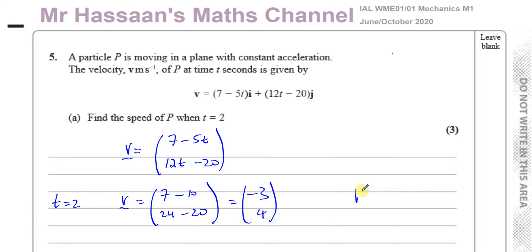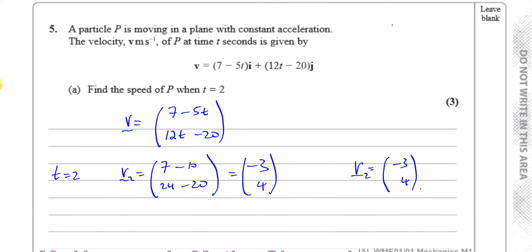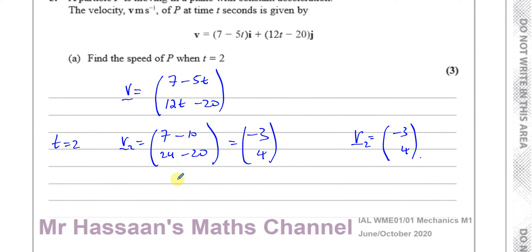So the velocity of this particle at 2 seconds is equal to (−3, 4). The velocity is a vector quantity and speed is a scalar quantity. So the speed is the magnitude of the velocity — the velocity tells you direction and how far; the speed is just how far, without direction. So we've got to find the magnitude of this velocity.